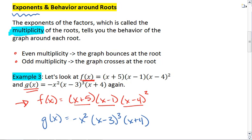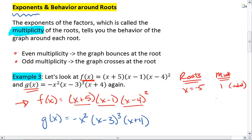So the multiplicity on the root x equals negative 5 is odd. With x equals negative 5, we have a multiplicity of 1, which is odd. For x equals positive 1, it's also a multiplicity of 1, which is odd. And for x equals 4, it's a multiplicity of 2, which is even.